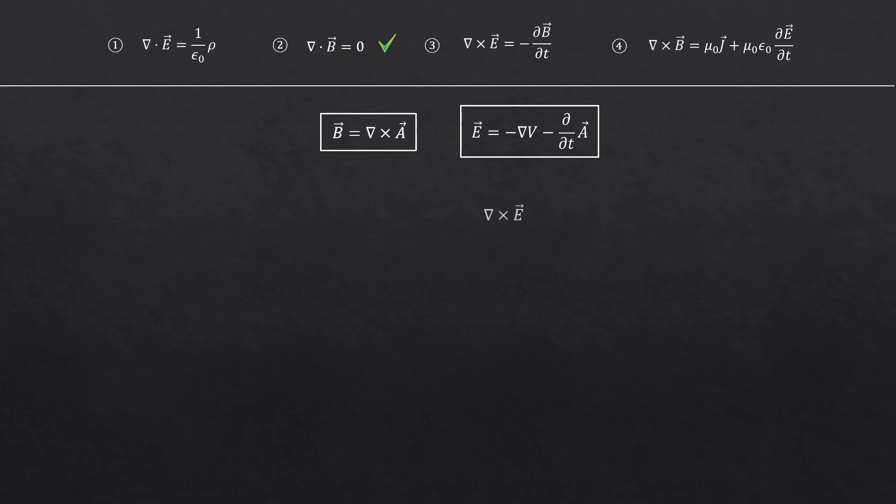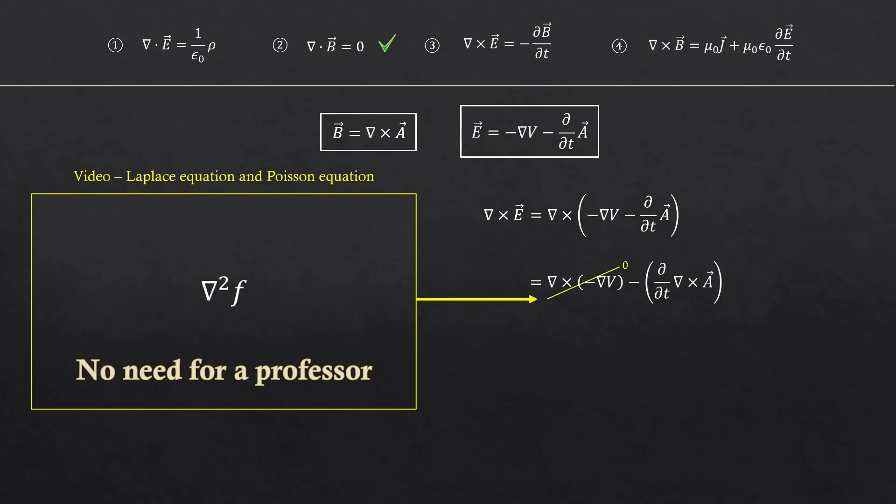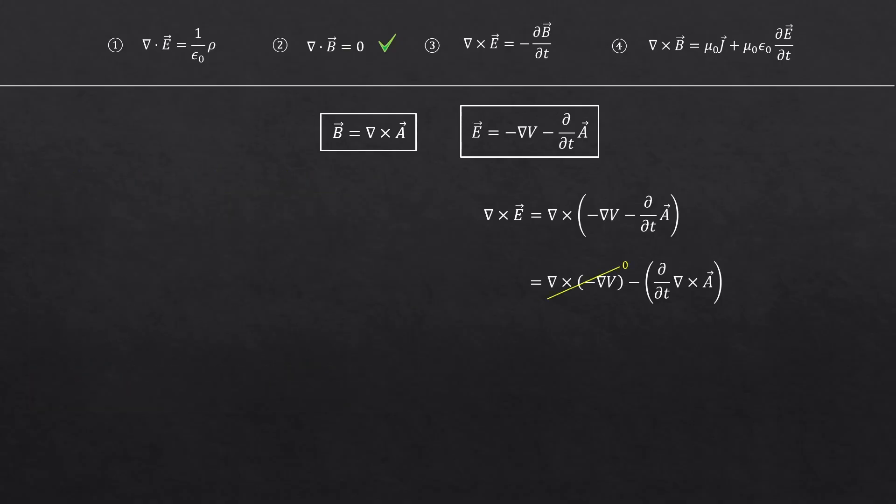Also, if you just take the curl of E using this definition, the curl of the gradient of a scalar is always zero and the curl of A equals B. So we are left with this, which is exactly the third Maxwell's equation.